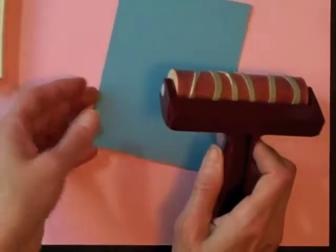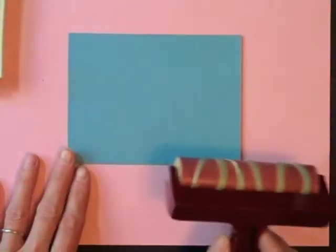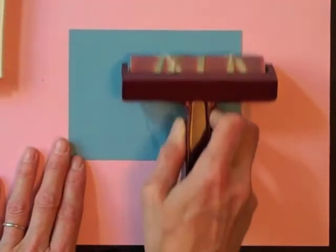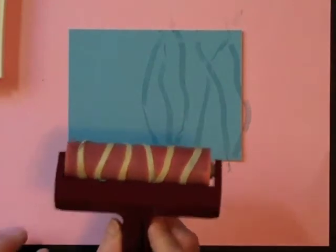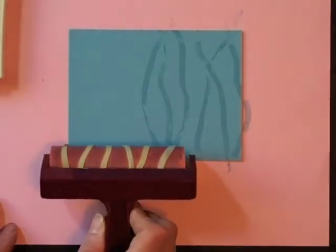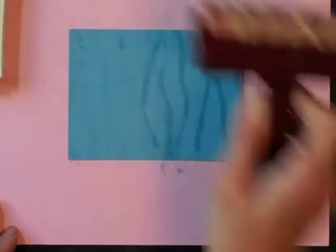And we're just going to turn this cardstock sideways and then I'm just going to roll my brayer across the cardstock. And I know I won't have as much ink this time but I'm going to move over to this side and roll it again.